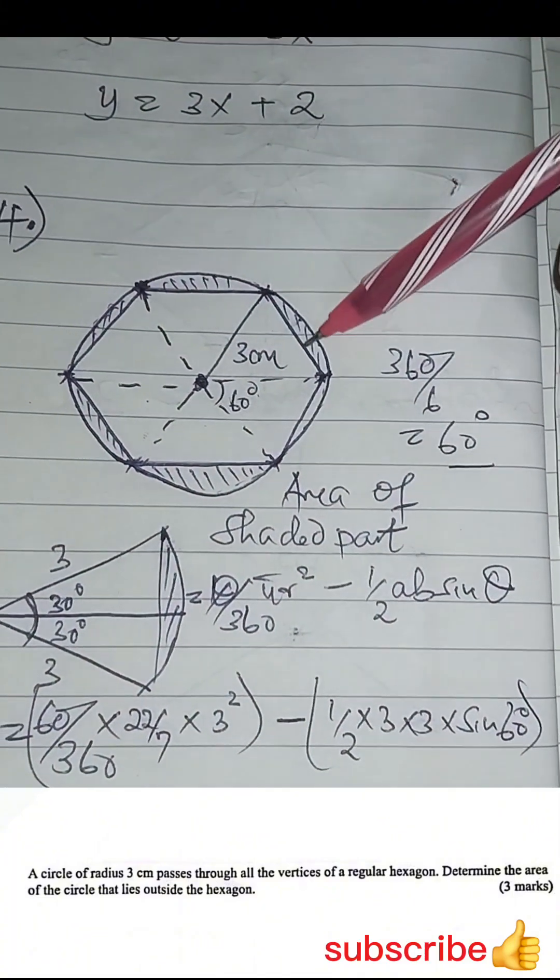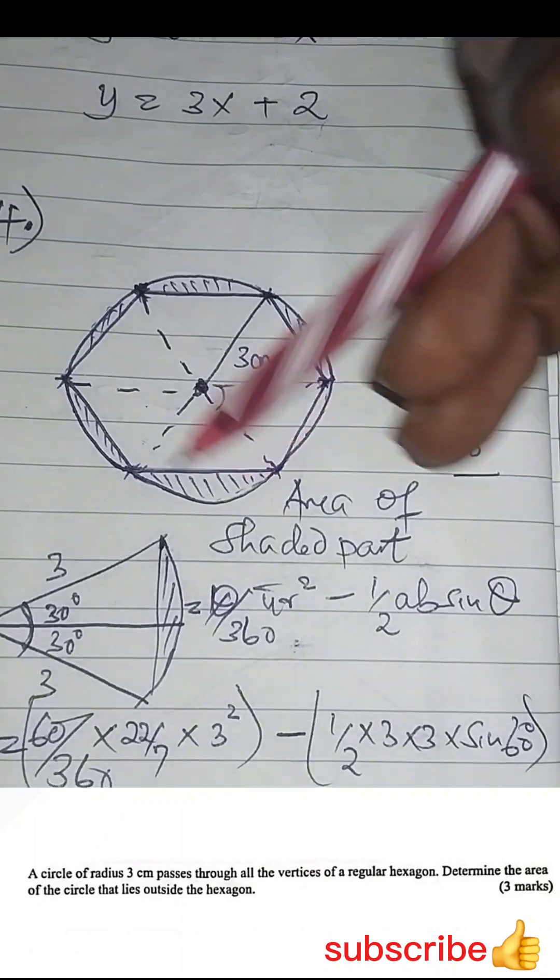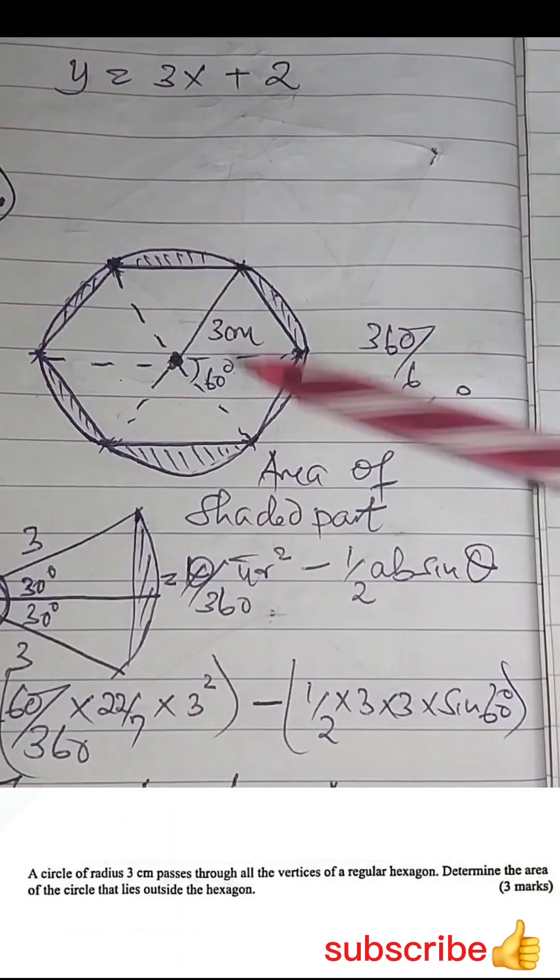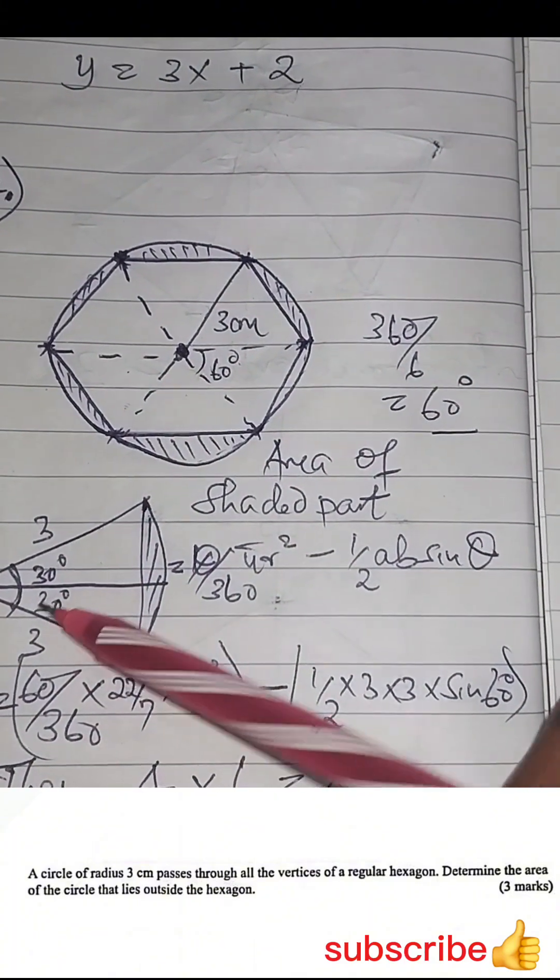They want the area of this part, outside the hexagon. We have six of them, so take one sector. You have the radius is three, the angle is 60.